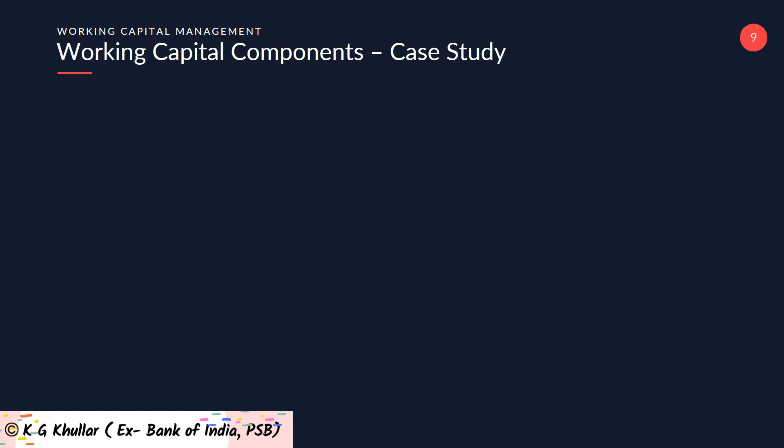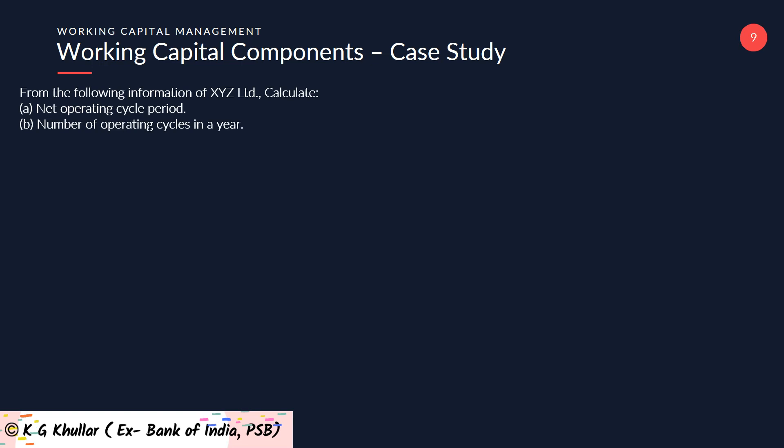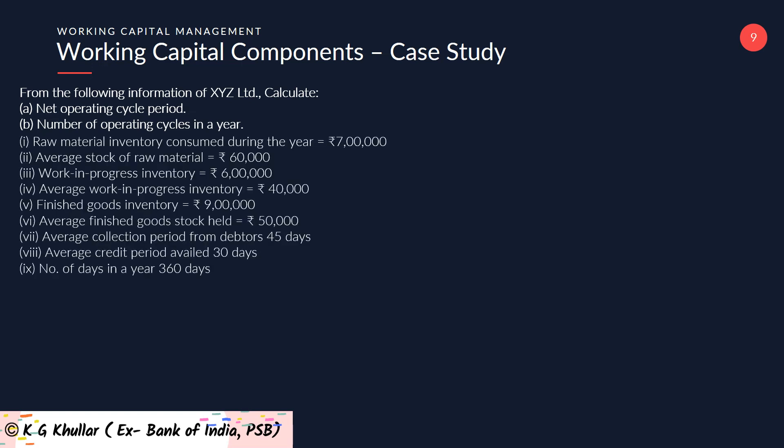The question goes like this: from the following information of XYZ Limited, you are required to calculate — first, net operating cycle period, and second, number of operating cycles in a year. The data given is: raw material inventory consumed during the year is 7 lakhs; average stock of raw material is 60,000; work in progress inventory is 6 lakhs; average work in progress inventory is 40,000; finished goods inventory is 9 lakhs; average finished goods stock held is 50,000; average collection period for debtors is 45 days; average credit period availed is 30 days; and number of days in a year is 360 days.